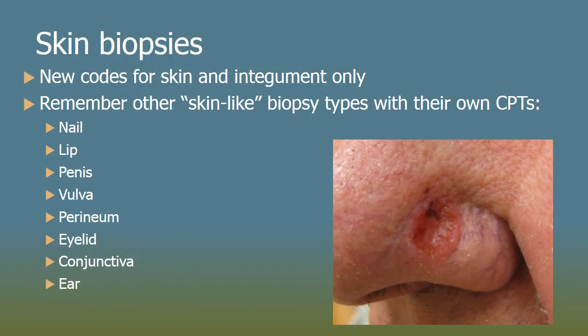These new codes are for skin and integument only. Within the skin there are several skin-like biopsy codes — areas covered by skin, mucous membrane, or skin-like membrane — that have their own CPT families: nails, lips, penis, vulva and perineum, eyelid and conjunctiva, and ear. The external ear skin has its own CPT code. Conversely, skin of the nose — such as a basal cell carcinoma — uses an ordinary skin biopsy code.